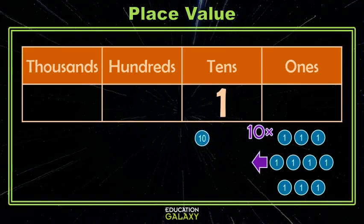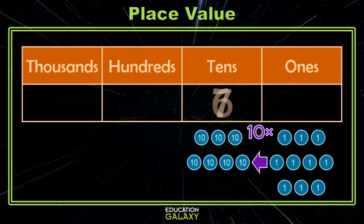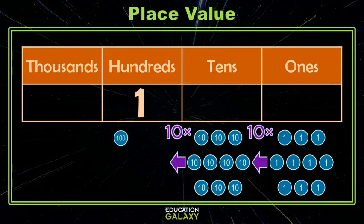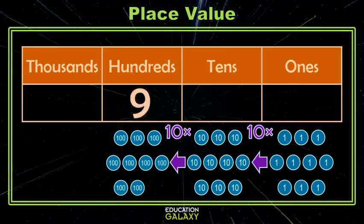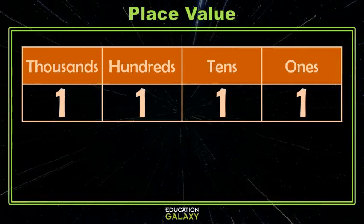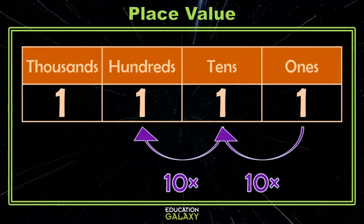And this will be similar as I move to greater place values. As I get up to 10 tens, we know that becomes 100. So to get from 10 to 100, I need to multiply by 10. And a similar thing will happen as we move toward the thousands, because 10 hundreds become 1,000, and that's also multiplying by 10. So in summary, each place value is 10 times the place value to its right.